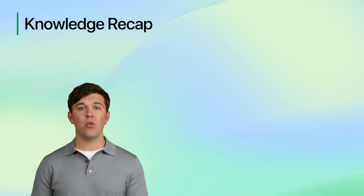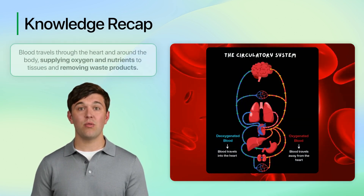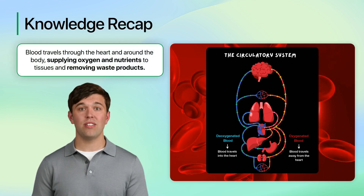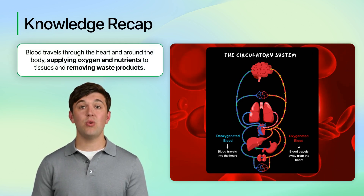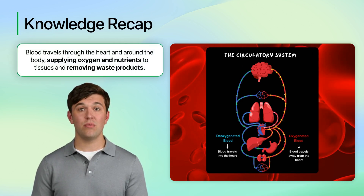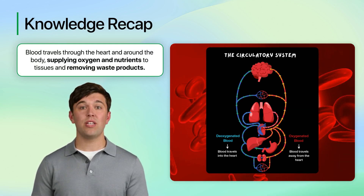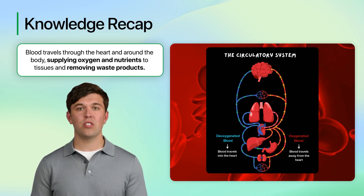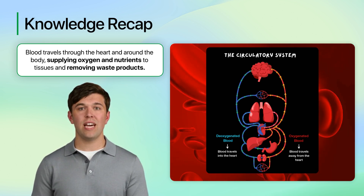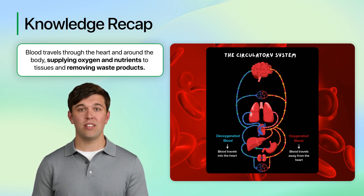So far, you have learned about the heart and circulatory system. You now understand how blood travels through the heart and around the body, supplying oxygen and nutrients to tissues and removing waste products. This foundational knowledge of the circulatory system sets the stage for us to examine what blood is made of and how each component contributes to this essential process.